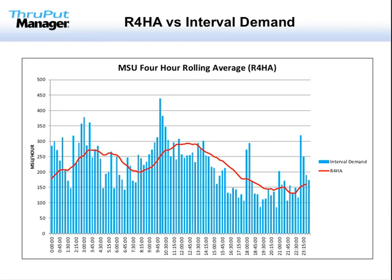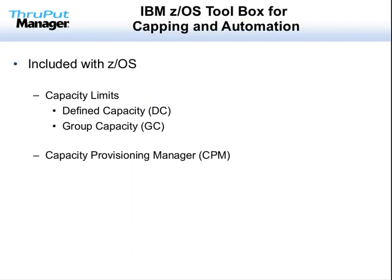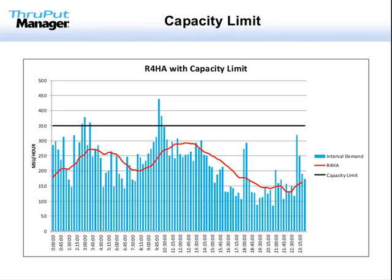Let's take a look at your basic tools. To assist with controlling software costs, IBM provides a number of capping options with ZOS. Most useful among these are the defined capacity and group capacity options, also referred to as capacity limits or simply soft caps. IBM also provides, at no additional charge, the Capacity Provisioning Manager. While CPM has been around for a while, there are some great enhancements in ZOS 2.1 that Selby is going to cover. As I mentioned, caps are also referred to as capacity limits, and their primary purpose is to control monthly software charges by limiting the rolling four-hour average.